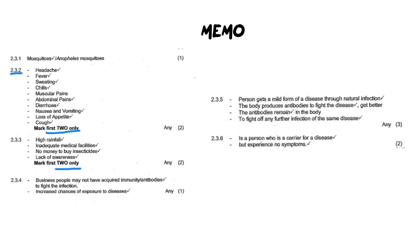I want to draw your attention to question 2.3.5's answer. This is the explanation on acquired immunity — you need to have knowledge about being exposed to a natural infection where you produce antibodies to fight off a disease. Those antibodies remain in your body, and then the next time you're infected you can fight off that disease. As it says here, you can have any three of these four answers.